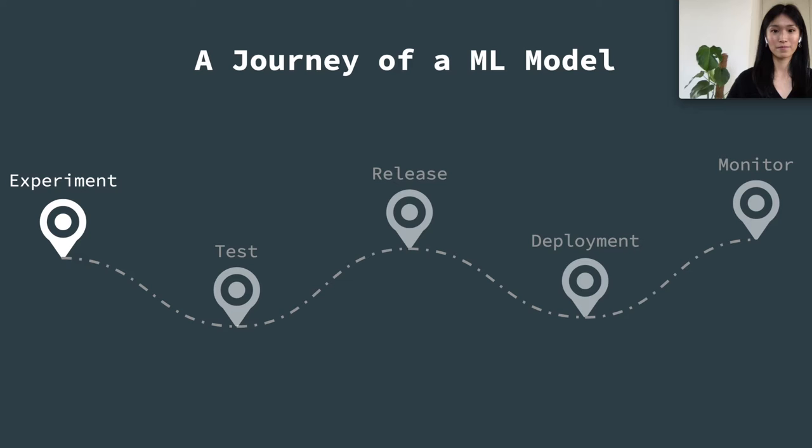Today I'm going to use a natural language processing 101 model — sentiment classification on IMDB movie review data — to illustrate the path a typical machine learning model travels through in the MLOps system. The journey includes several stops: experiment, test, release, deployment, and monitor. Experiment is our first stop.